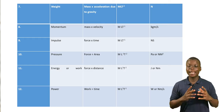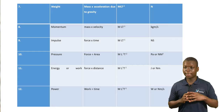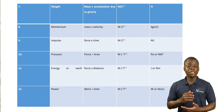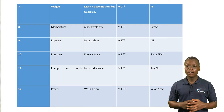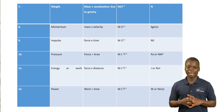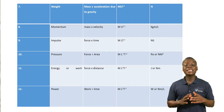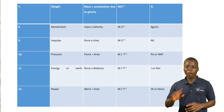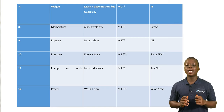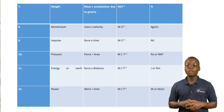Next up we have energy or work. The derivation of energy or work is force times distance. So the dimension will be ML squared T raised to power minus 2. At the last one, we have power, which is the ability or capability to do work. The derivation of power is work over time, and the dimension is ML squared T raised to power minus 3. Power is measured in Watts.